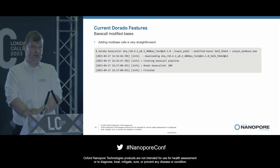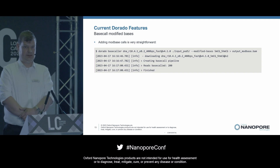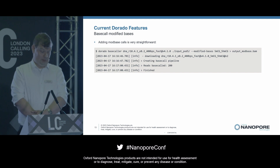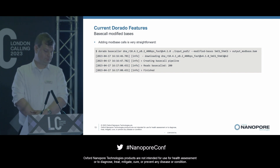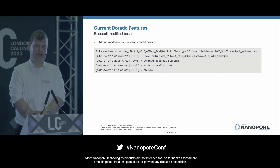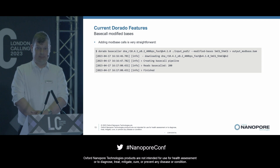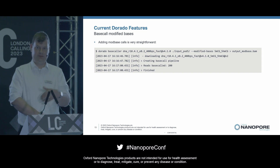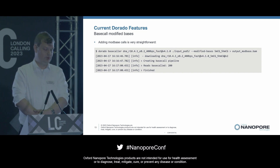Modified base calling is very straightforward to do — simply add the modified bases switch and the type of modified bases that you want. As long as we have a model available, we'll download it for you and we will produce modified base calls. For people who've done modified base calling in Guppy, you'll know there's a big performance impact for doing that. On Dorado, all of the modified base calling has been GPU-accelerated, so the performance penalty for doing mod bases is much, much smaller than it was before.